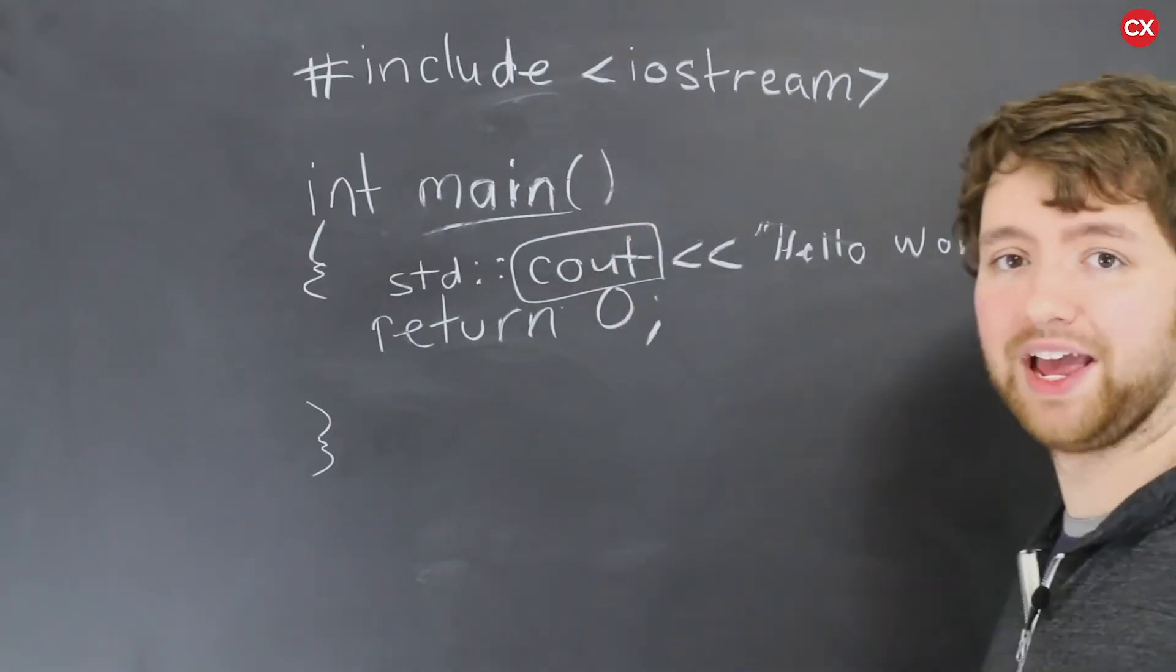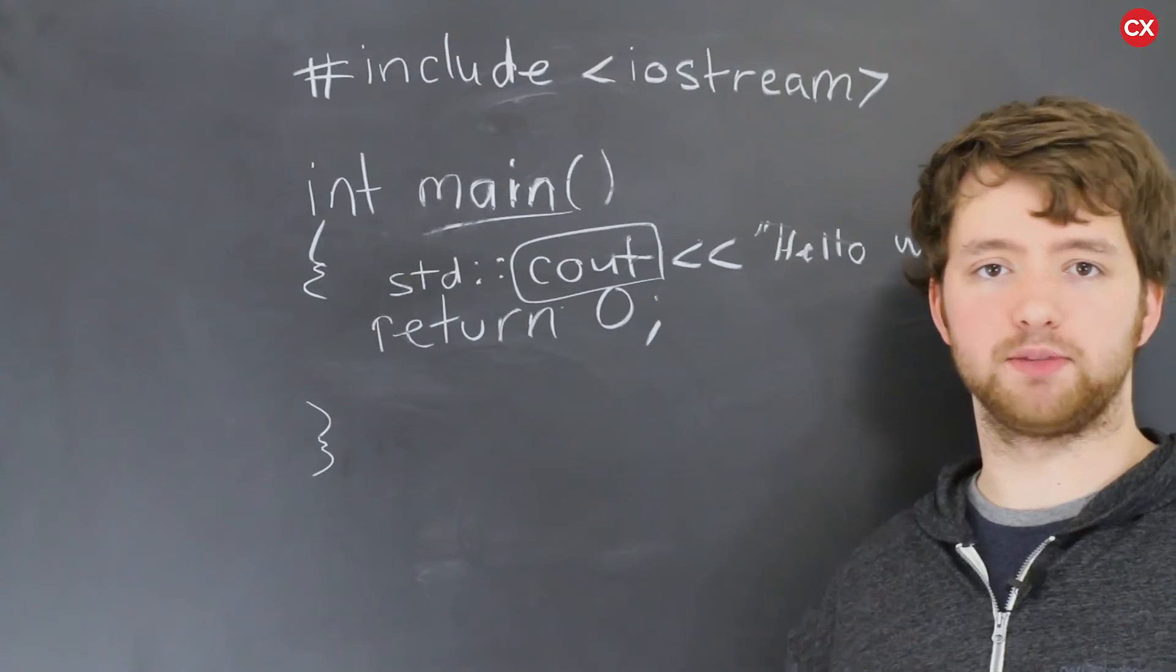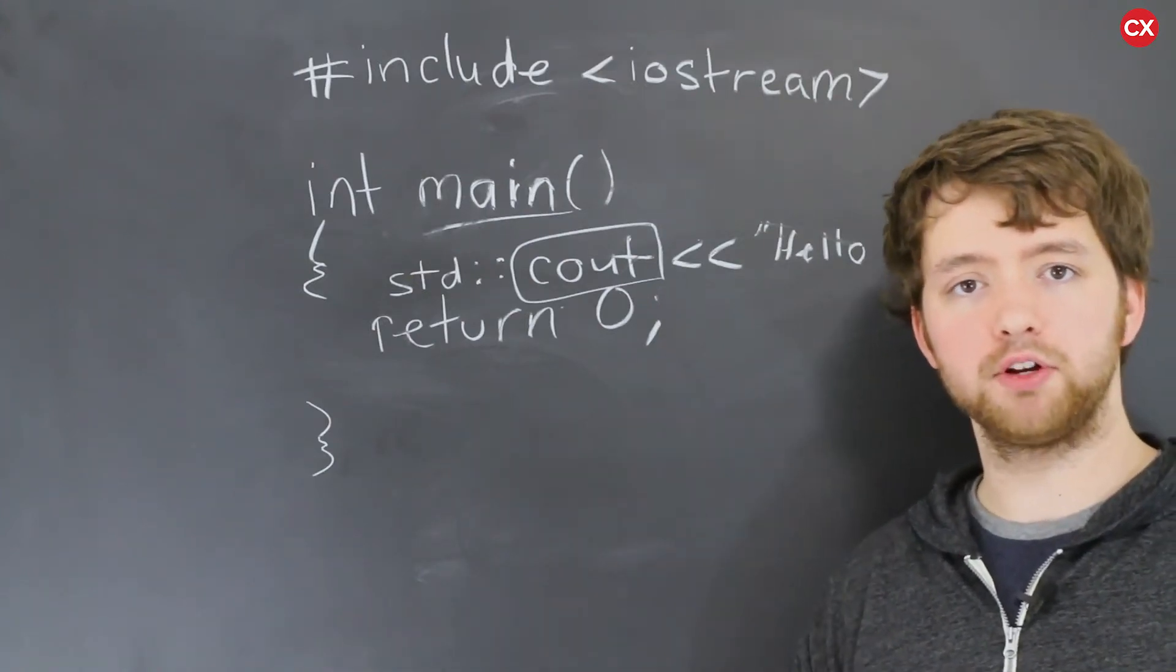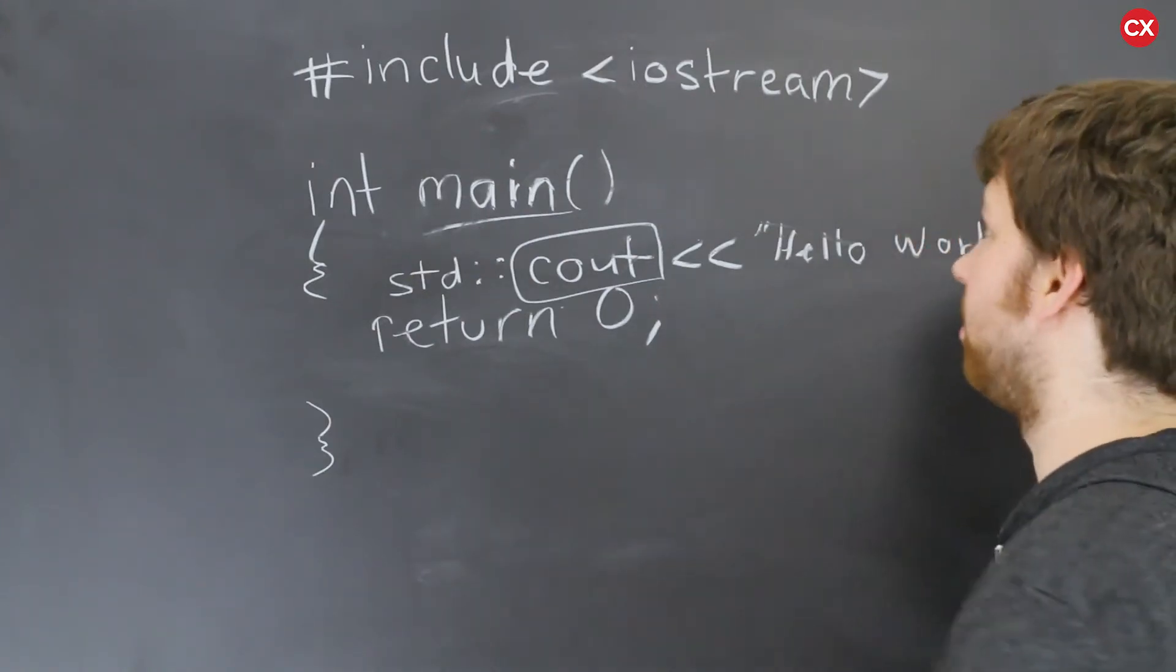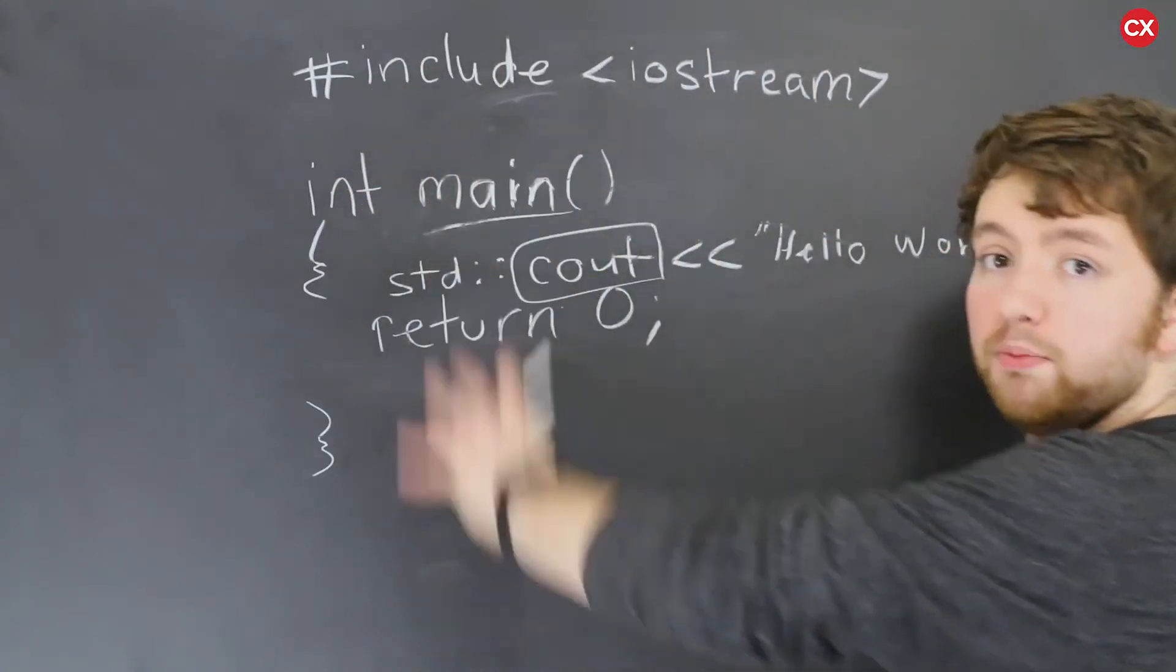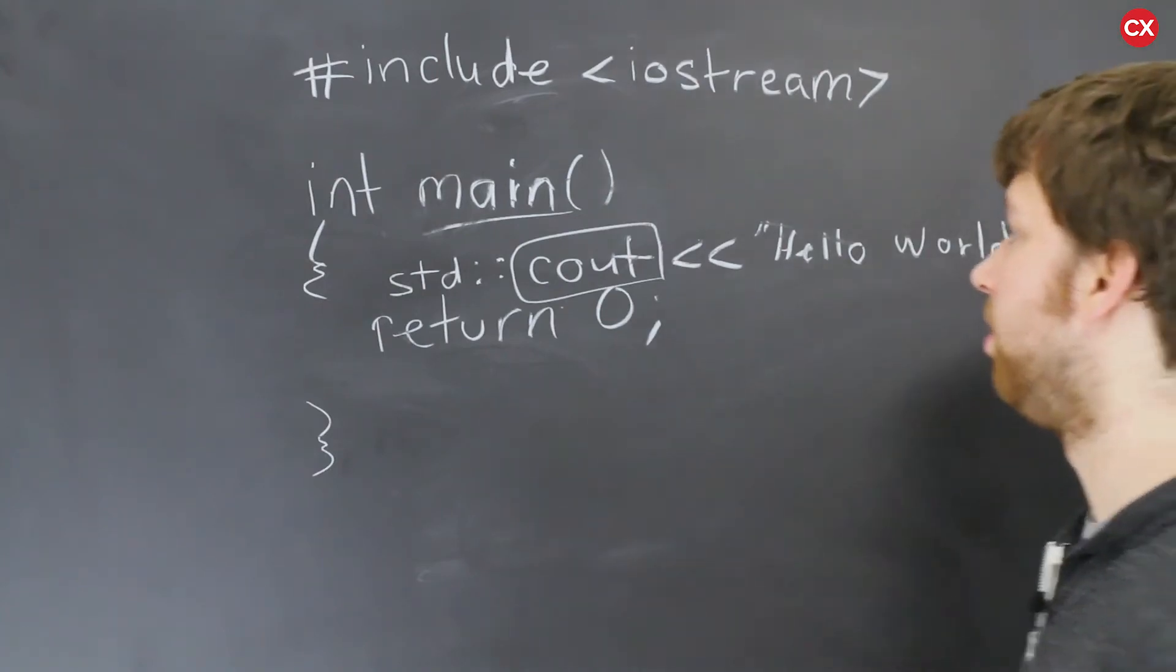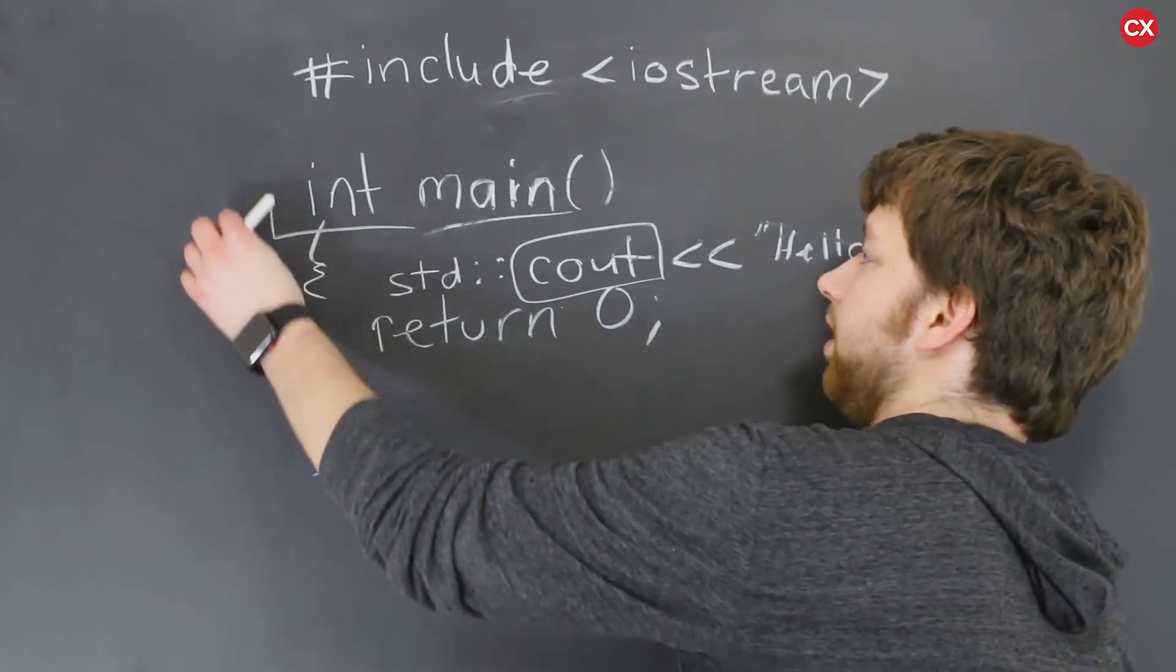So this works because of what's known as the preprocessor. The preprocessor is something that happens before all of the code is compiled. And the preprocessor is basically going to take the content of this file and put it inside of our program to make it available for us. All right. So that's pretty good so far. But one thing we didn't talk about was this right here.